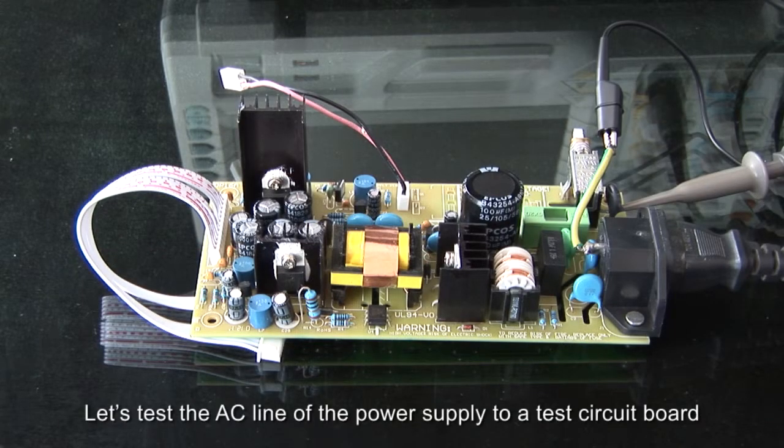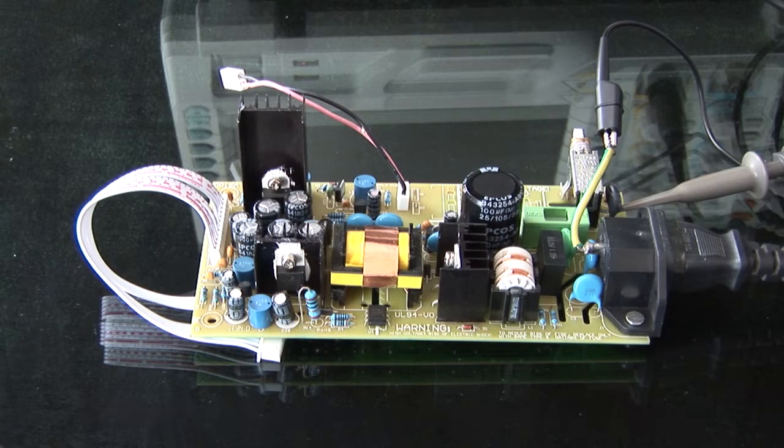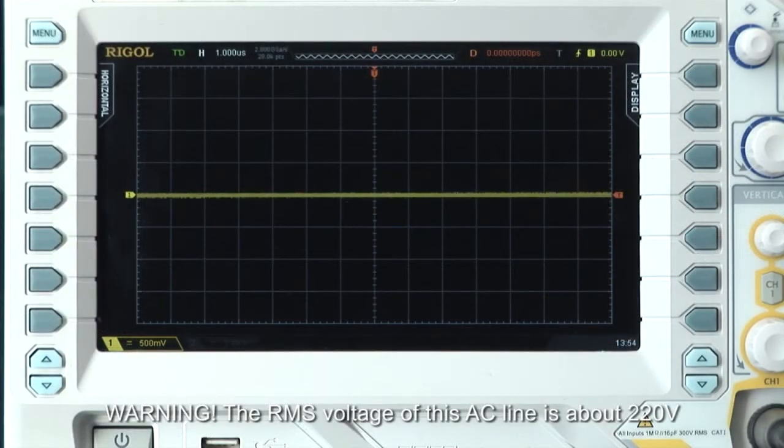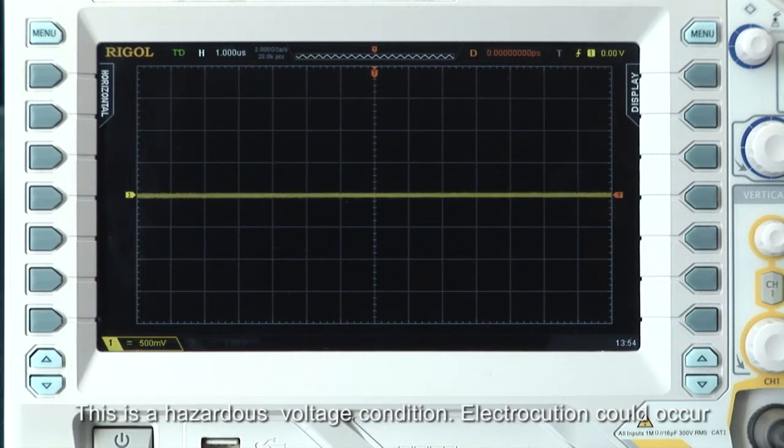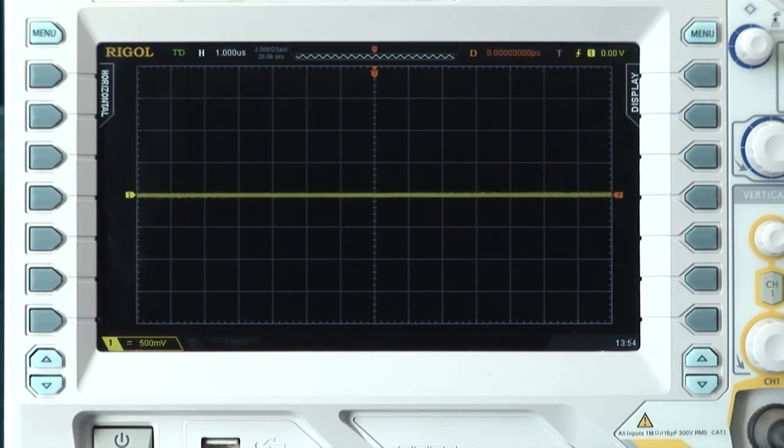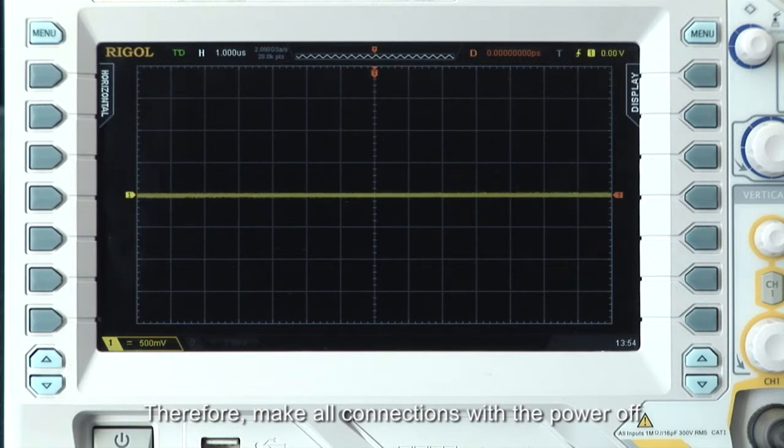Let's test the AC line of the power supply to a test circuit board. The RMS voltage of this AC line is about 220 volts. This is a hazardous voltage condition and electrocution could occur. Therefore, make all connections with the power off.